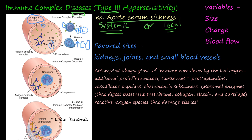Antibodies come out in large quantities and bind to all these antigens. These antibodies act as flags for neutrophils and other white blood cells — these leukocytes — to get rid of the antigen floating around in your body. This forms an antigen-antibody complex, and that is phase one: immune complex formation. Phase two is the immune complex deposition.